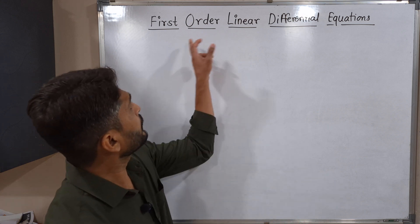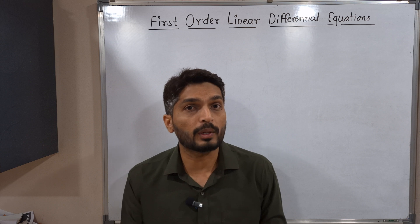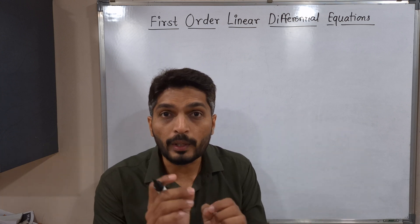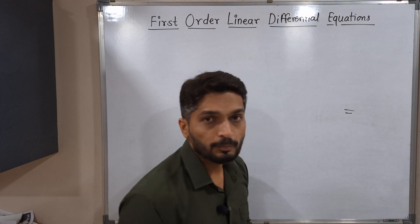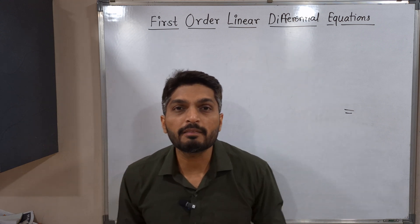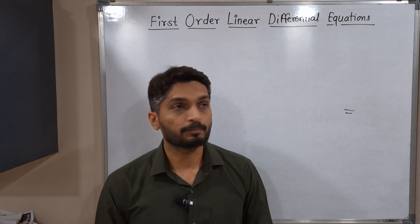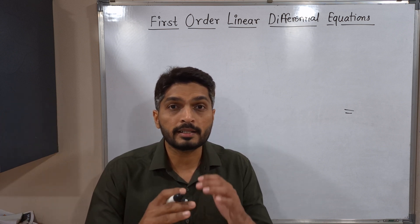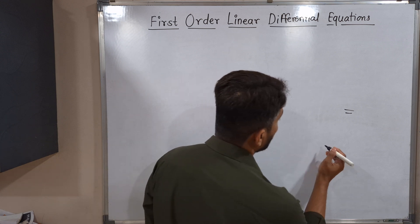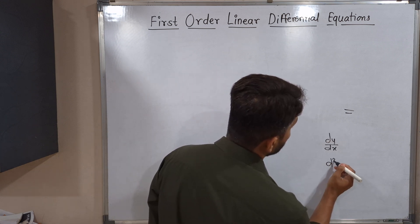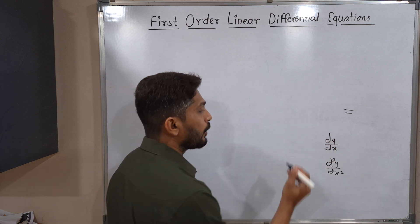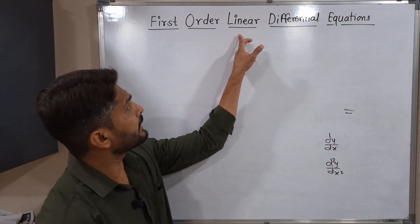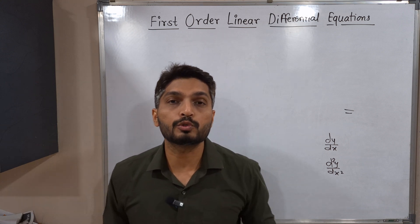Let's count the words in 'first order linear differential equation' — there are five words. Let's understand their meanings one by one. 'Equation' means a mathematical expression with an equal-to sign. 'Differential' means derivatives are involved, so we call it a differential equation. 'First order' means only the first order derivative is present — if you have a differential equation with only a first order derivative, we call it a first order differential equation.